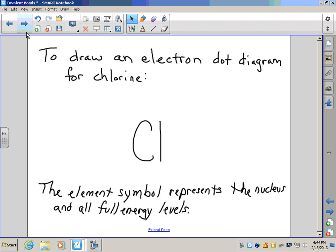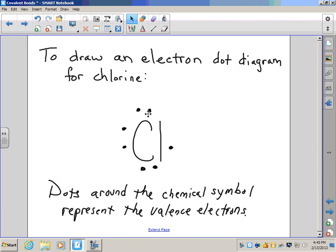To draw an electron dot diagram for chlorine is much easier. You just take the chemical symbol Cl, capital C, lowercase l, and that element symbol represents the nucleus and all full energy levels. So it represents those first two energy levels. We then draw dots around it to represent the outer energy level, the valence electrons. And since chlorine has seven valence electrons, you draw seven dots. And that's it. It's very easy to draw the chlorine electron dot diagram.